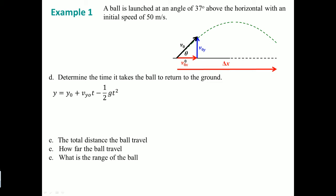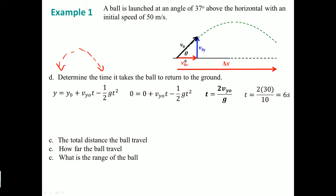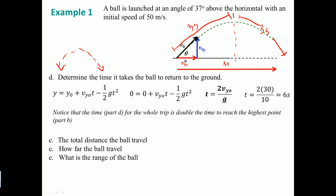Next, we find the time for the ball to return to the ground. The equation behaves like a quadratic — it's parabolic, it's a projectile. Setting Delta Y equal to zero and solving for T, we get T equals 6 seconds. This makes sense because it took 3 seconds to reach the peak, and by symmetry of the parabola, another 3 seconds to come down. The total trip time is simply double the time to reach the highest point.